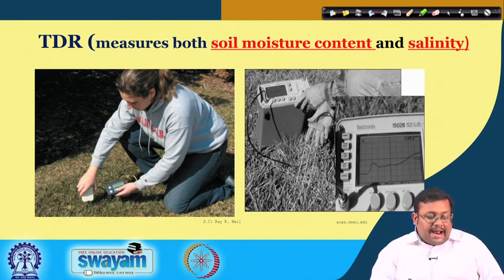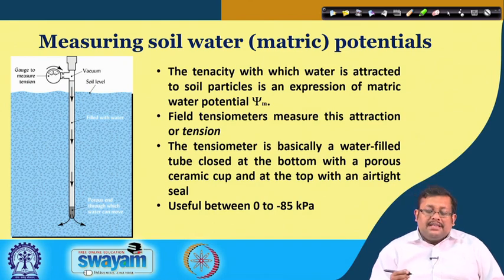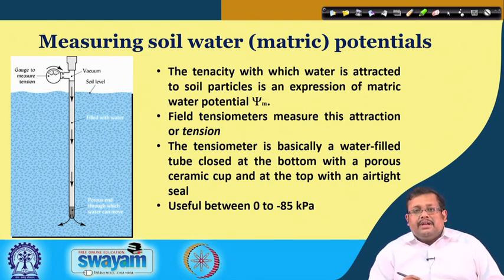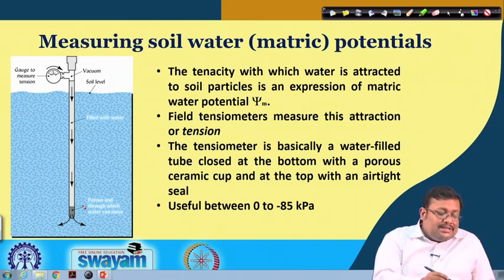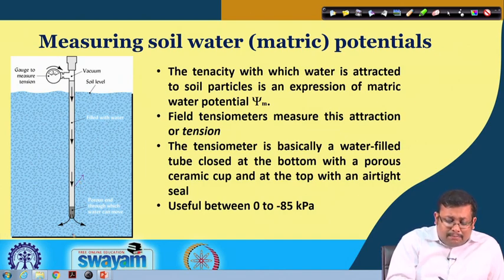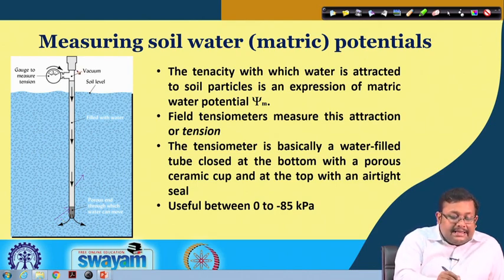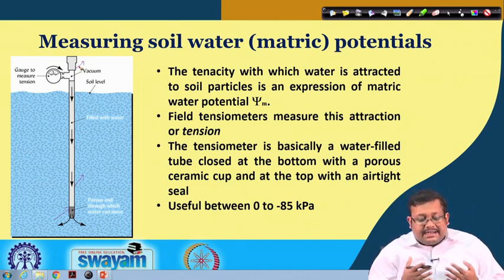Another important instrument for measuring soil water metric potential is the tensiometer or field tensiometer. It is basically a water-filled tube closed at the bottom with a porous cup and at the top is an airtight seal. The tenacity with which water is attracted to the soil particle is an expression of soil metric potential, and these tensiometers measure that attraction or tension.